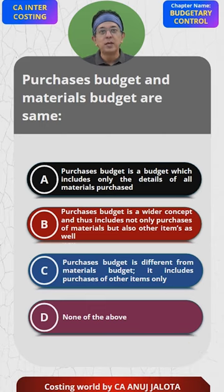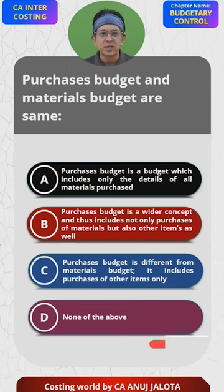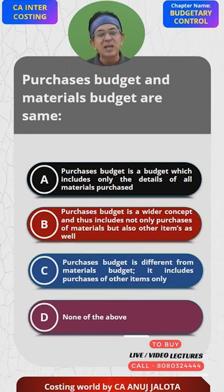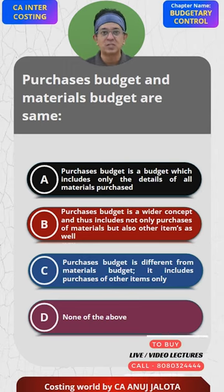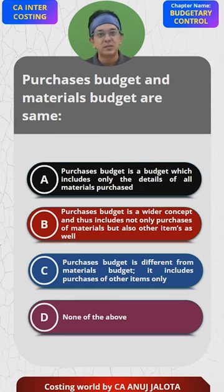In materials budget, we only put things about the raw materials which go inside the product. But in purchase budget we include every category of purchases that an organization will require in this year. So the answer in this case should be B — that's the correct answer.